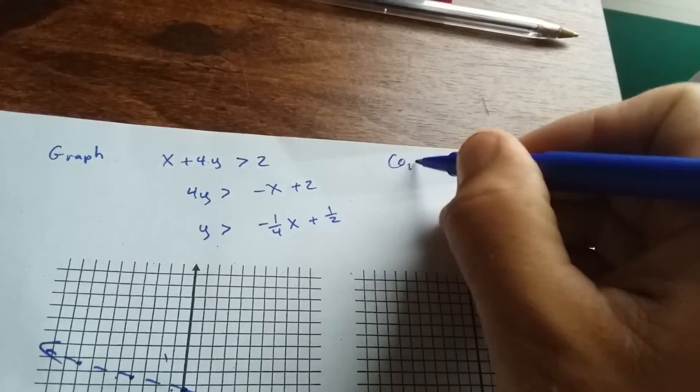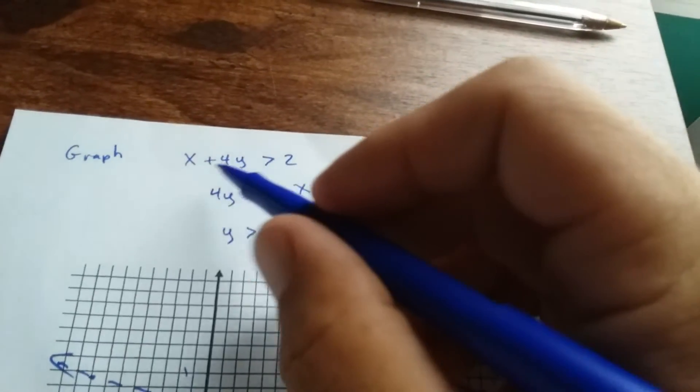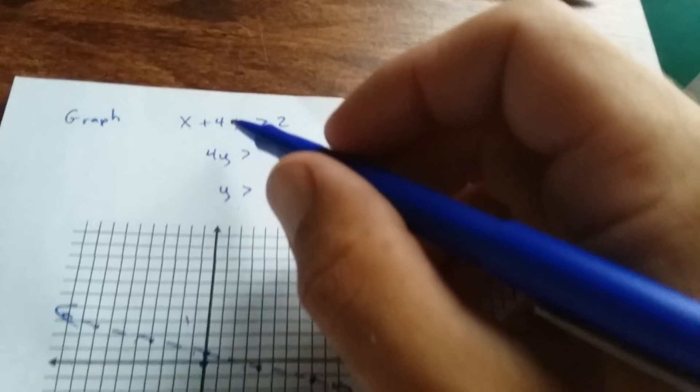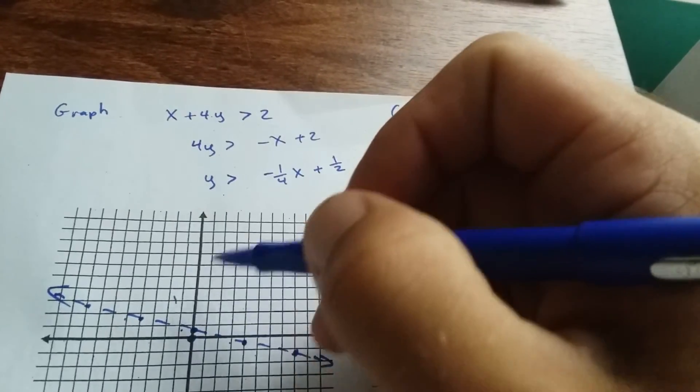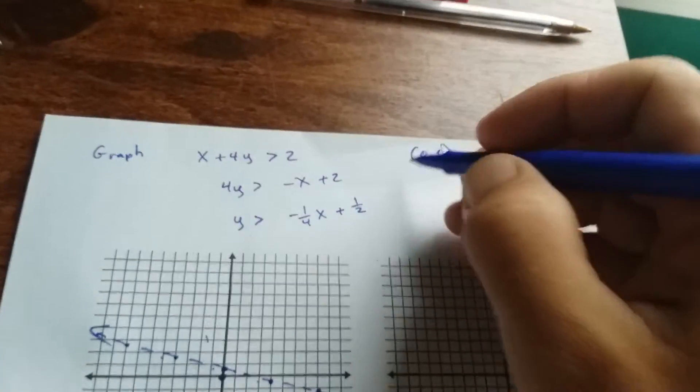So I'm going to check the point 0, 0. I'm going to plug 0, 0 into here. If it's true, I shade in that side. If it's false, I shade in the other side of the boundary line.